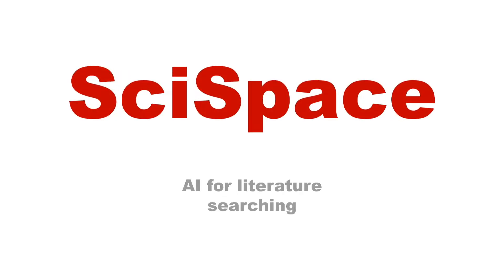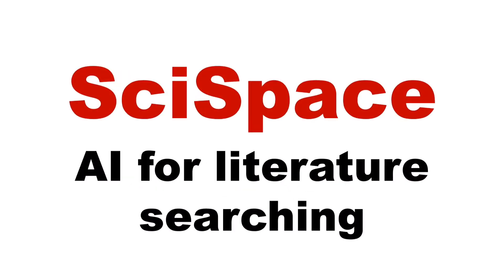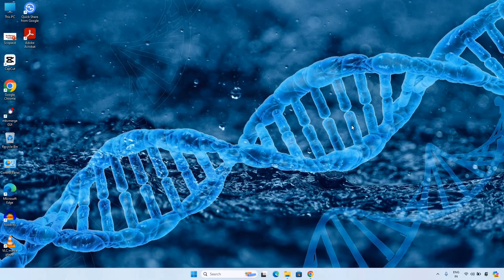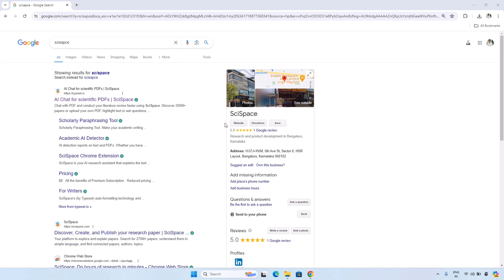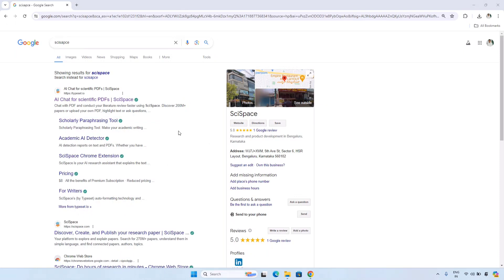Today I will discuss a very important tool called SciSpace. With this tool you can make your literature searching very easy. It integrates AI so that you can search within the literature within a few minutes. To access SciSpace, open your browser, search for SciSpace in Google, and click on the first website that appears — that is the main website.